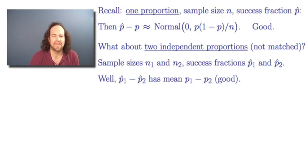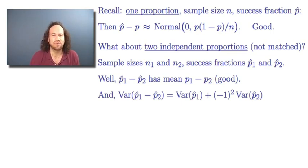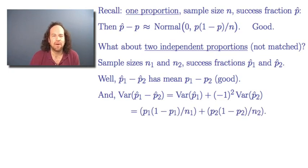In order to make progress with confidence intervals and hypothesis tests, we also need to know the variance. The variance of p1-hat minus p2-hat: since the samples are independent, we can add the individual variances, and the minus sign disappears when squared. So we get a sum of the two individual variance terms — that familiar formula p times one-minus-p over n — now summed for each of the two samples.